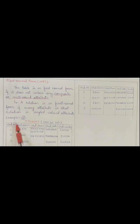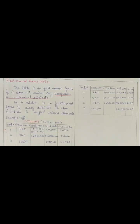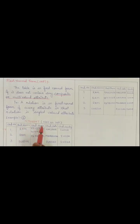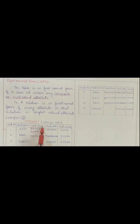Here you can see student number. Let's take this first tuple. You can see student number value is 1, student name attribute value is RAM. The student phone number attribute is having two values — this and this. That means student phone is the attribute which is having multiple values. That's why here we say student phone attribute is a multi-valued attribute.